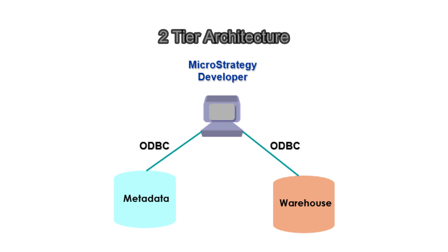Two-tier architecture consists of two tiers. The first tier consists of two databases: the data warehouse, which contains the information that users analyze, and the metadata that contains information about MicroStrategy objects. The second tier includes the MicroStrategy Developer client component. The connection between MicroStrategy Developer and the database layer is an ODBC DSN connection. This type of connection is also called a direct connection because the MicroStrategy Developer client component connects directly to metadata and warehouse without any server. Two-tier mode is typically not used in production systems, as MicroStrategy does not recommend it — the iServer responsible for managing security and scalability is not involved. Two-tier mode can be used to create prototypes or troubleshoot reports when there is an issue with the iServer.